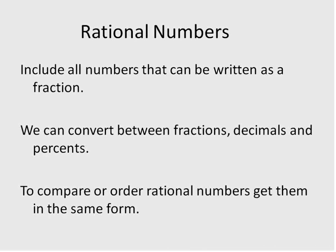So some things to remember about rational numbers: they include all numbers that can be written as a fraction. We can convert between fractions, decimals, and percentages, though we didn't look at percentages specifically today. But fractions and decimals, we can definitely convert between them. And to compare or order rational numbers, get them in the same form. Sometimes you can do that as a decimal. Sometimes you need to make fractions with common denominators.